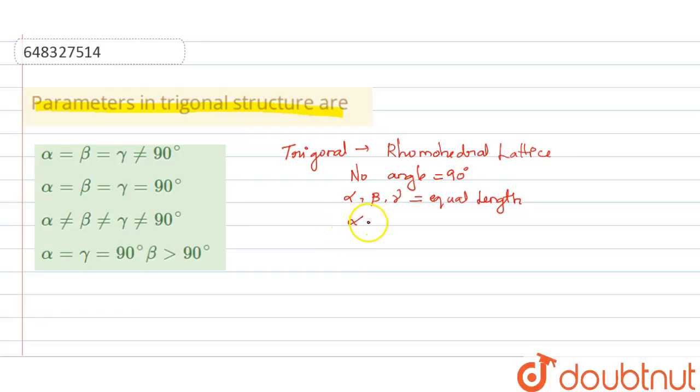So this means that alpha equals beta equals gamma, and these all three angles are not equal to 90 degrees. This is the parameter of trigonal structures.